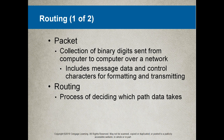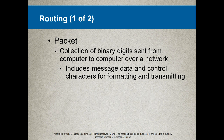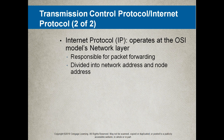Routing is the process of deciding which path data takes. It's determined by the type of network and the software used to transmit that data. An IP address is divided into a network address and a node address — where the node is a single computer. For example, somebody living in Cape Town is the network, and their address at number 12 Adderley Street is the node address.